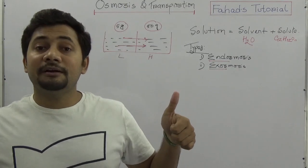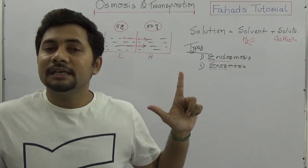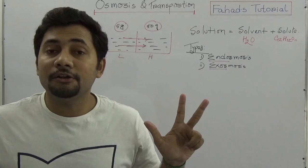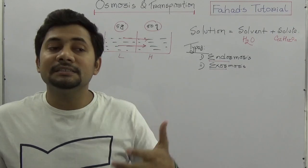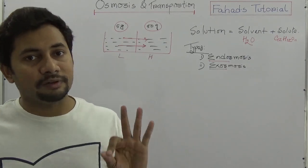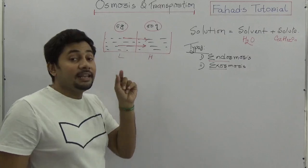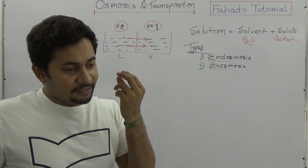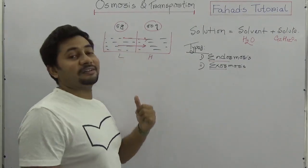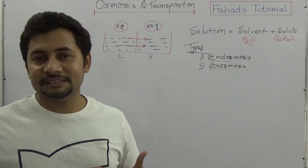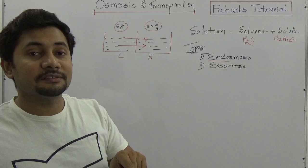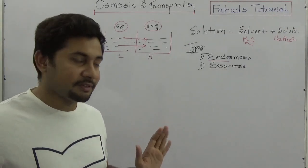Based on the membrane, we can classify three types: number one is permeable membrane, number two is semi-permeable membrane, and number three is impermeable or non-permeable membrane. Based on permeability, membranes can be three types. The selectively permeable membrane is important because it allows the flow of selective solvents. So osmosis is simply the flow of solvent from lower concentration to higher concentration.